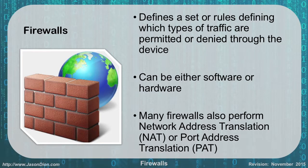Firewalls — for the Network Plus exam you have to understand what firewalls do. Firewalls essentially define a set of rules that tell us what types of traffic are permitted or denied through our network. They can be software-based or hardware-based. Windows 7 and above provides a software firewall by default, and Macs from OS X onward have one you can turn on. A hardware firewall is a dedicated device that does the same function better and protects the entire network instead of just one computer. Many firewalls also perform NAT and PAT — address translation that can be performed either by the router or by a firewall.